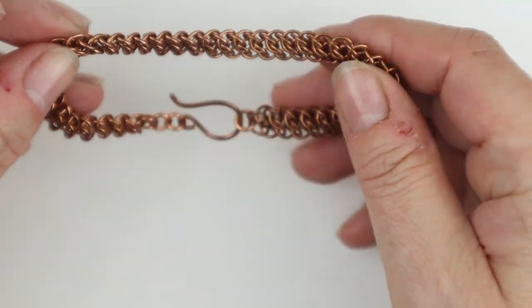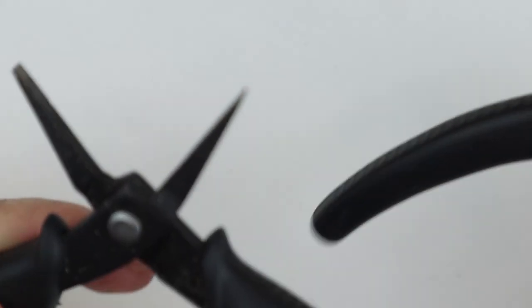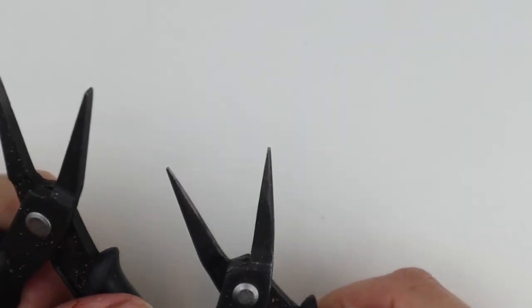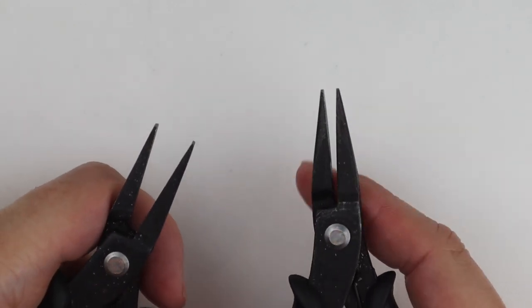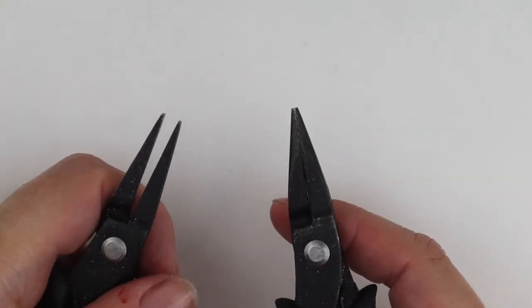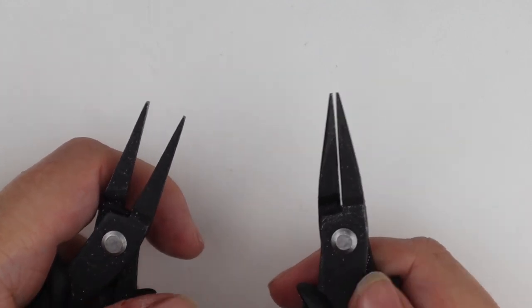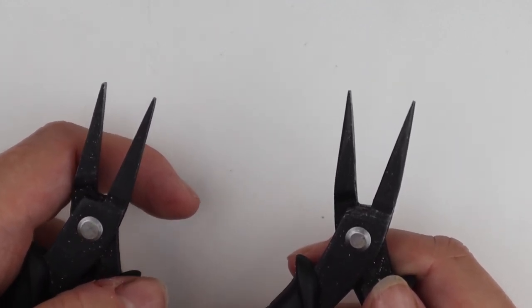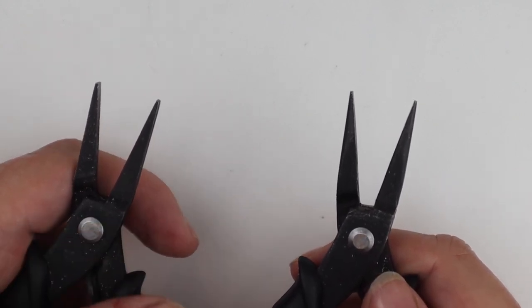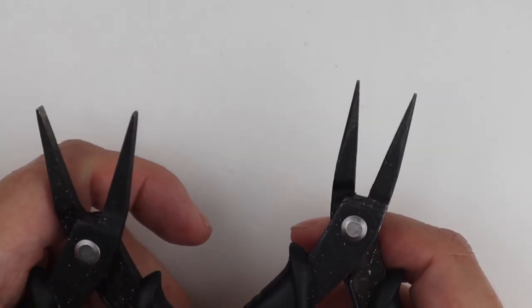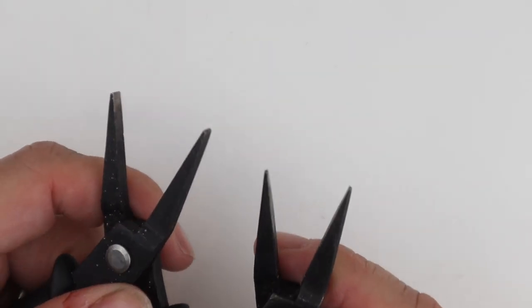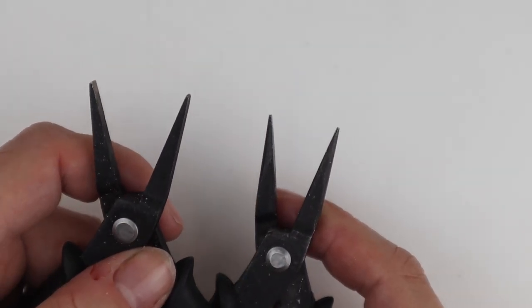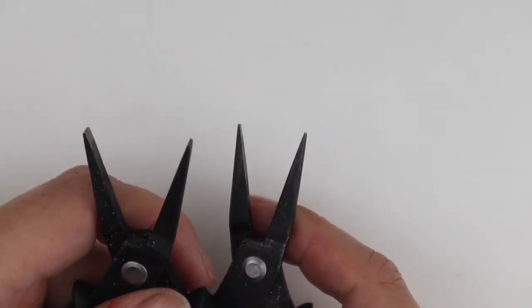So what you're going to need to make this bracelet are your trusty pliers - your chain nose and your flat nose. Never use your round nose for chain mail. In the description below I'll pop a link to these pliers that I have for sale on my website. It's called the chain mail starter kit where you get two pairs of pliers and a beading mat, which makes it so much easier to keep your jump rings in place.